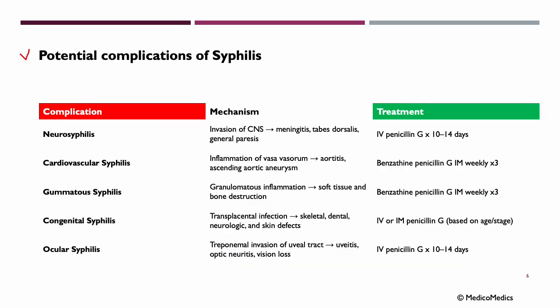Let's look at some potential complications of syphilis. First, neurosyphilis — the bacteria invade the central nervous system, leading to meningitis, tabes dorsalis, or general paresis. Treatment: penicillin. Another is cardiovascular syphilis — inflammation of the vasa vasorum, leading to aortitis and ascending aortic aneurysm. And congenital syphilis — through transplacental infection, we can see skeletal, dental, neurologic, and skin defects. Again, treatment: penicillin.